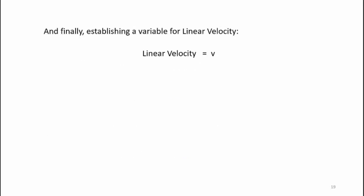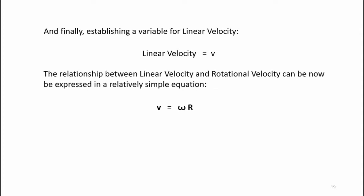And finally, establishing a variable for linear velocity, linear velocity equals v, you get the simple relationship of v equals omega r. So that is linear velocity equals rotational velocity times radius, with omega in radians per second.